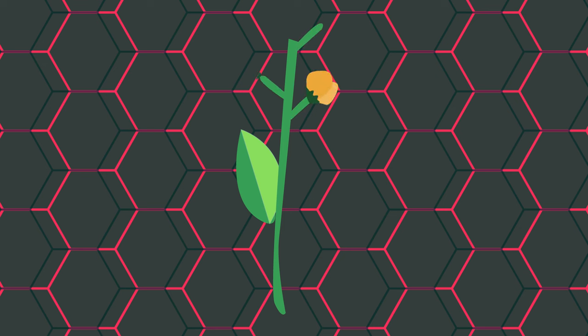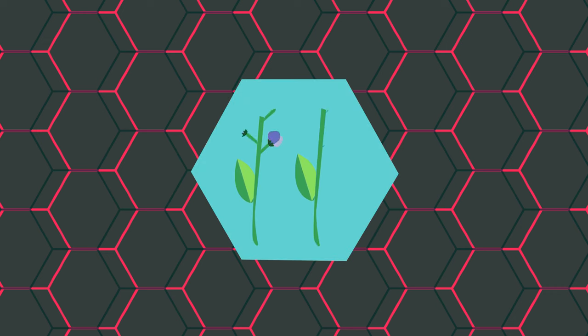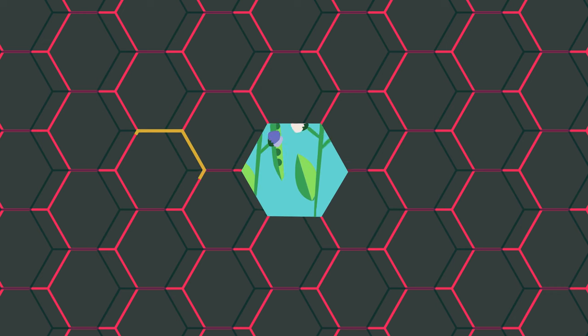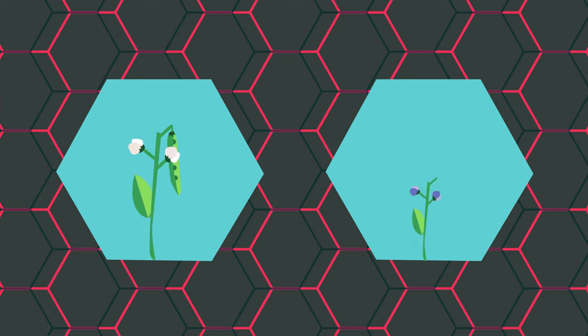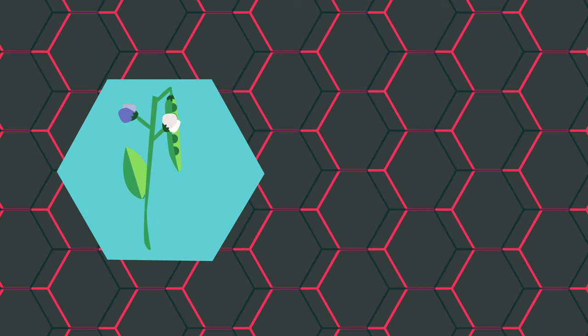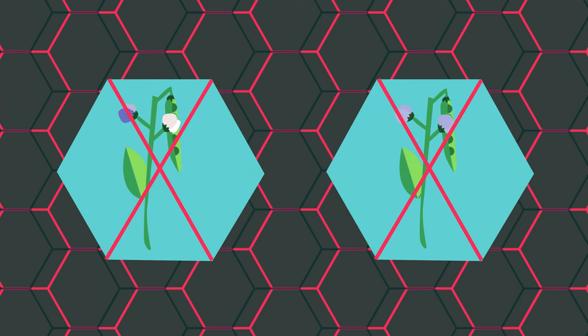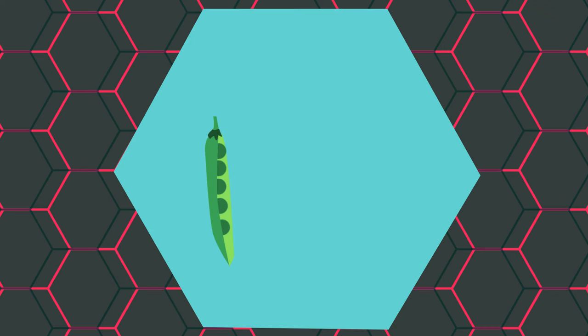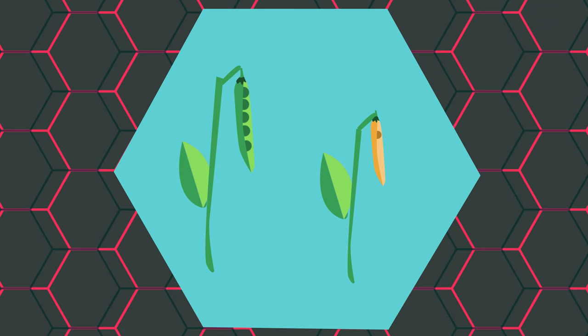Mendel studied the inheritance of different characteristics in pea plants. He found that when he bred purple-flowered plants with white-flowered plants, the offspring would either be white or purple, not a mixture of the two, or a pale purple. He also noticed that this held true for other traits, like the seed and the pod color, either being yellow or green, and not a mix, and the stems being long or short, and not somewhere in the middle.